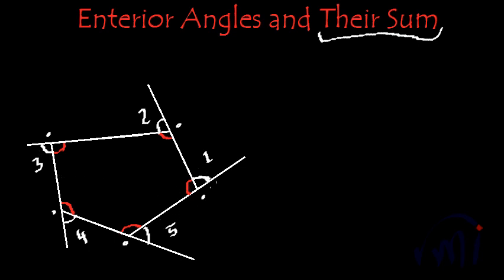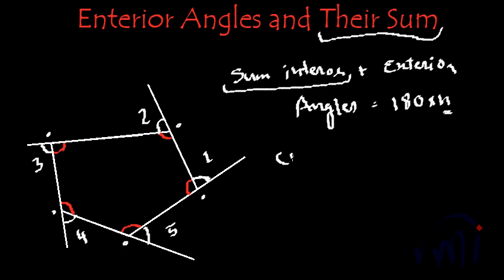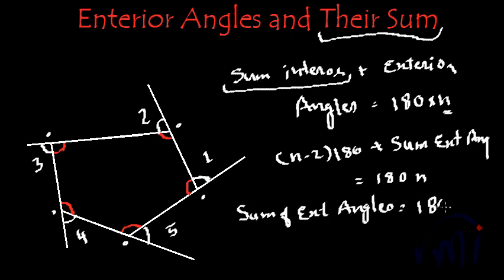Together, each interior and exterior angle pair makes a straight line, so their sum is 180 degrees. Therefore, the sum of all interior plus exterior angles equals 180 multiplied by n, where n is the number of vertices. The sum of interior angles of a polygon is (n minus 2) multiplied by 180. So: (n−2)×180 plus the sum of exterior angles equals 180n.